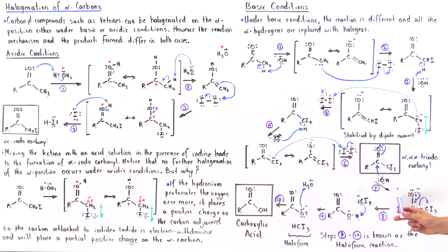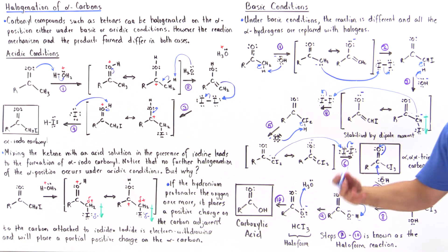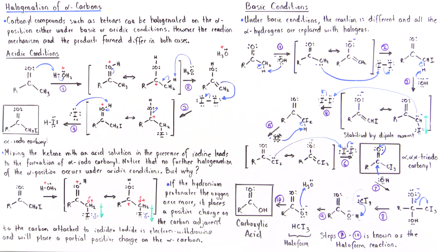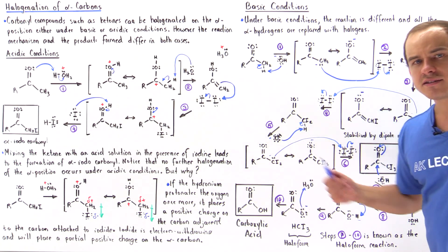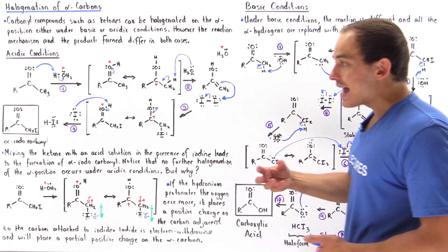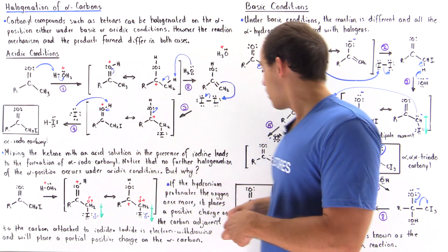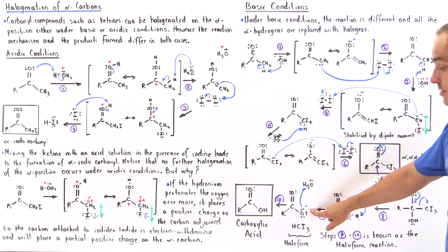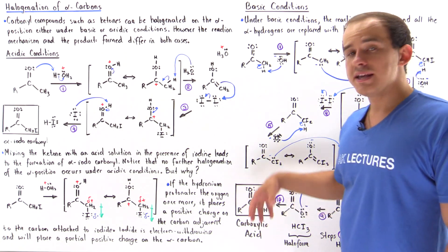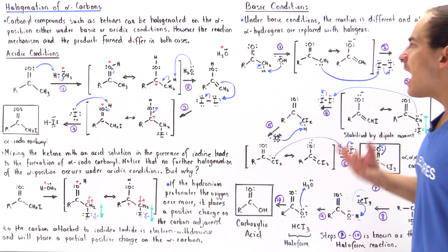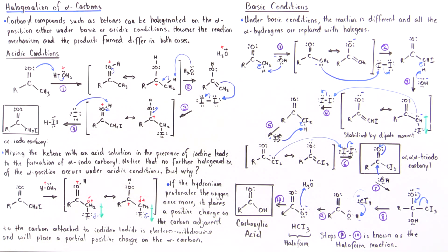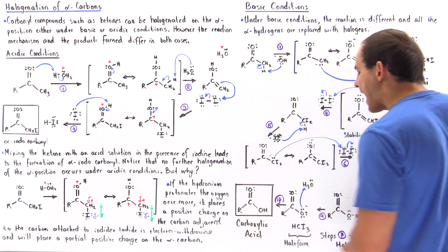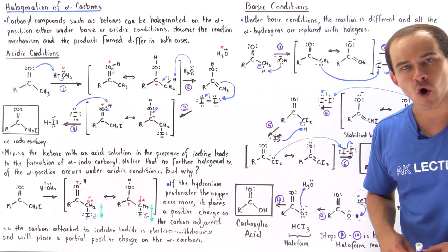This entire reaction is known as the haloform formation reaction and only takes place under basic conditions. The final step, step ten, is to add some type of acid — for example hydronium — which protonates the oxygen and forms a carboxylic acid. So the final products under basic conditions are a carboxylic acid as well as the haloform.